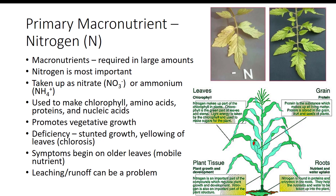Macronutrients are chemical elements that are required in large amounts for normal growth and development of plants. The primary macronutrients include nitrogen, phosphorus, and potassium. Primary macronutrients are required in large amounts, and soils are commonly deficient in one or more of them. Besides carbon, hydrogen, and oxygen, nitrogen is the most important element in growing vegetative tissue.